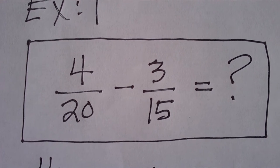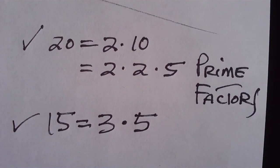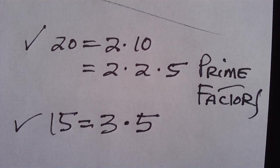So, we have to take the twenty and the fifteen and break them down into their prime factors. Divide twenty by two, we get two times ten. Divide ten by two, we get two times five. So, the prime factors are two, two, and five.